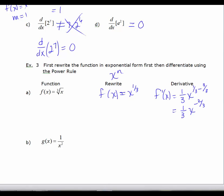Now, there's more than one way to leave this answer. If you are asked to leave your answer with positive exponents, you would say 1 over 3x to the 2/3. If you are asked to write your answer in radical form, then you would say 1 over 3 times the cube root of x squared. All of these are forms of f prime of x. They are all acceptable. It just depends on how you're asked to leave your answer.